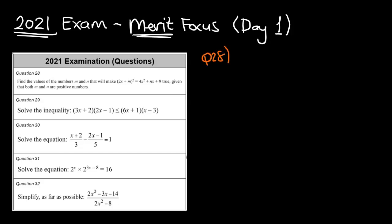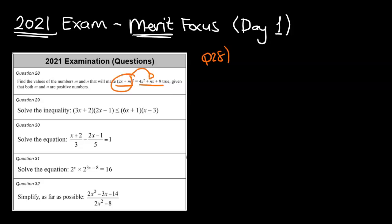Question number 28: find the possible values of m and n that will make this equal to this. We've been told down the bottom that they are both positive numbers. This one I suspect is going to be quite tricky. What we've got is the factorized form and the expanded form, so I'm going to expand this to see how it relates.